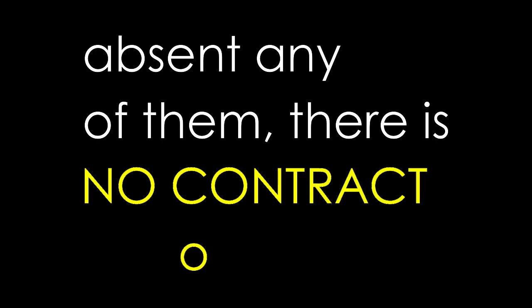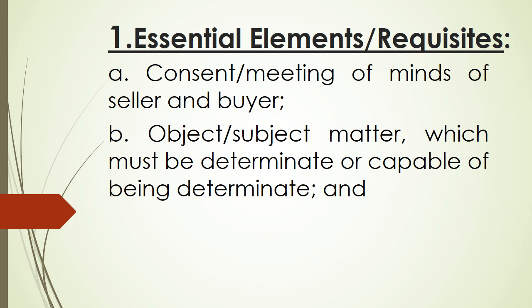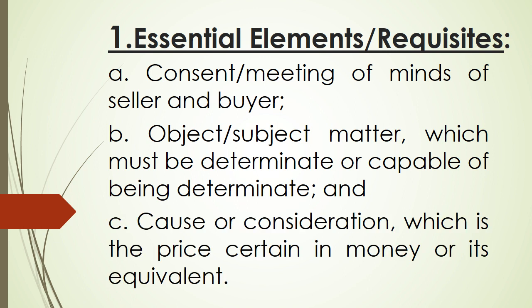The essential elements of sale are: first, consent or meeting of minds of the seller and buyer; second, the object or subject matter, which must be determinate or at least capable of being determinate; and third, the cause or consideration, which refers to the price certain in money or its equivalent.